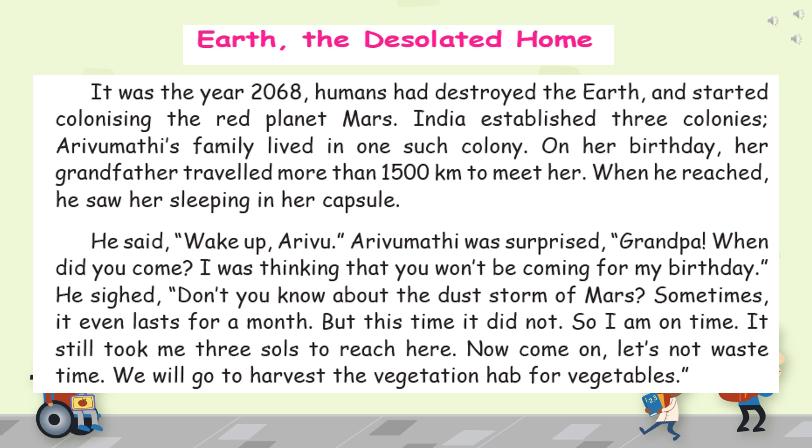Let me give you a brief of this lesson, children. This lesson, Earth the desolated home, is about a grandfather and a child. As in our land, in Earth, we have lost everything. People are cutting down the trees, destroying the birds, destroying the animals, and everything is being vanished. And so the Earth is demolished, Earth is destroyed.